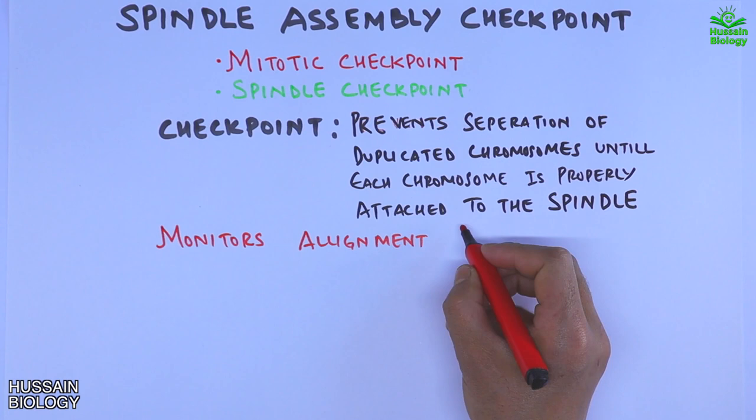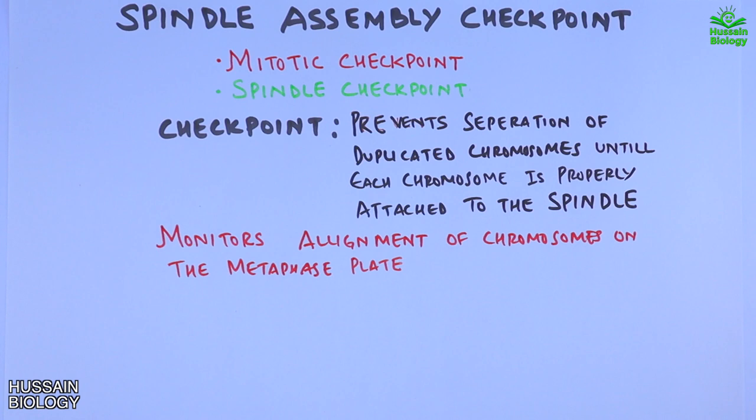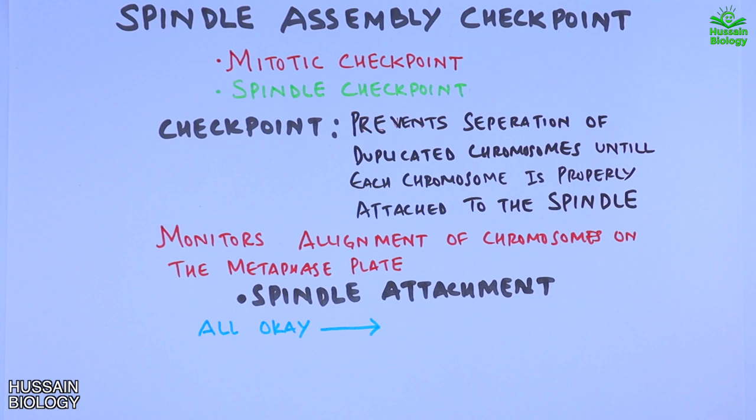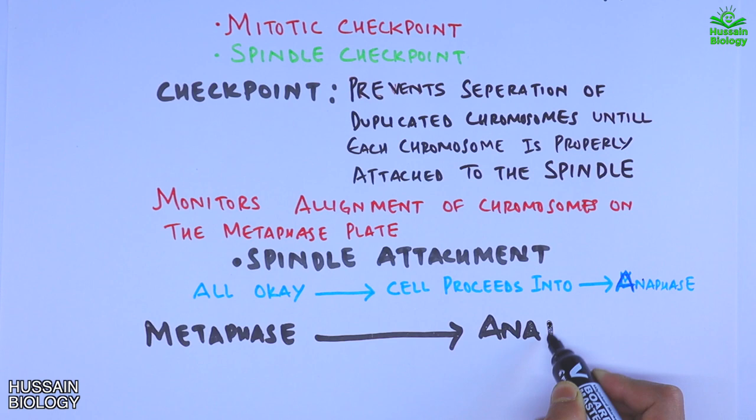This checkpoint also monitors the alignment of chromosomes on the metaphase plate. Under normal conditions, we have spindle attachment to the chromosome at the centromere — all is okay, and the cell proceeds into anaphase.